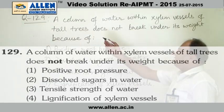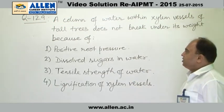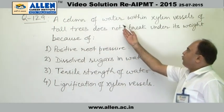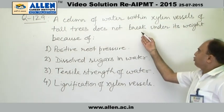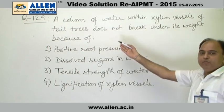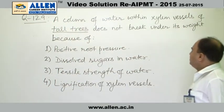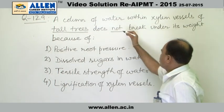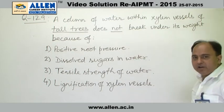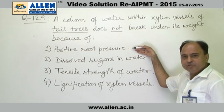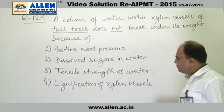Question number 129 is a very intelligently framed question. It asks about why a column of water within xylem vessels of tall trees does not break under its own weight. The options available are: positive root pressure, dissolved sugars in water, tensile strength of water, and lignification of xylem vessels.